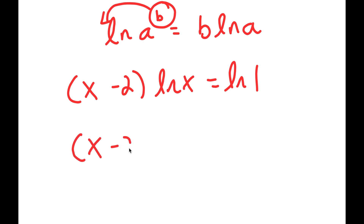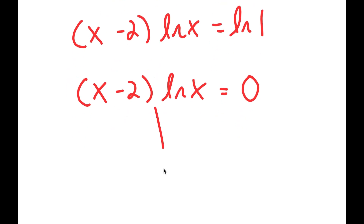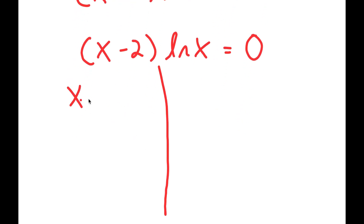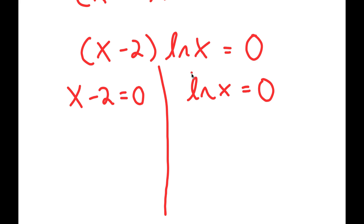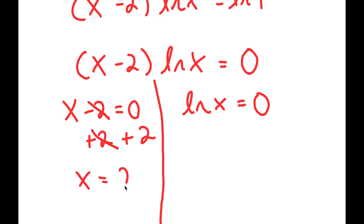So I have x minus 2 times ln x is equal to 0. From here, I get two equations. I get x minus 2 is equal to 0, and I also have ln of x is equal to 0. For the first equation, all I have to do is add 2 on both sides — these cancel out and I'm left with x is equal to 0 plus 2, which is 2.